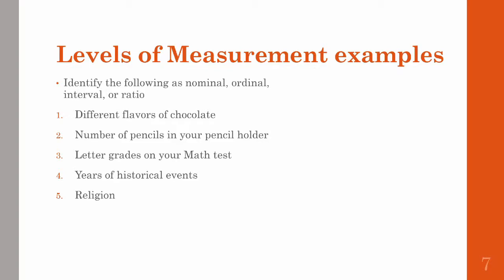All right, so here are the answers. The first one is nominal. Labels for chocolate tells you if they're the same or different, but there's no information about the order of chocolate. The second is ratio. There's an ordering to it, more or fewer pencils. The scale between them is the same, and there's a true zero. There can be zero pencils in the pencil holder. Number three is ordinal. Letter grades do tell an order, higher or lower, but the scale between them isn't the same.